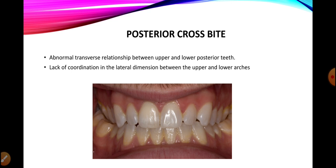If the abnormal relationship between the maxilla and mandible is in the transverse dimension, what we get is a posterior crossbite. An abnormal transverse relationship between upper and lower posterior teeth results in a posterior crossbite, which may be due to lack of coordination of the maxillary and mandibular arch lines of occlusion. Here we can see that the posterior teeth of the maxillary arch are lying more lingual compared to the mandibular arch, which is lying buccal — this is a posterior crossbite.